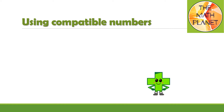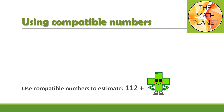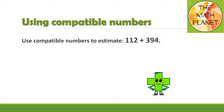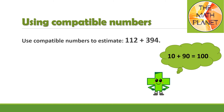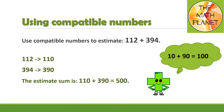Now let's try to use compatible numbers to estimate sums. Let's estimate the sum of 112 plus 394. We need to think of pairs of numbers that are easy to add mentally. Let me think of 10 plus 90 equals 100. The first addend is 112, so I can estimate it to be 110. The second addend is 394, so I can estimate it to be 390. Then the estimate sum is 110 plus 390 equals 500.